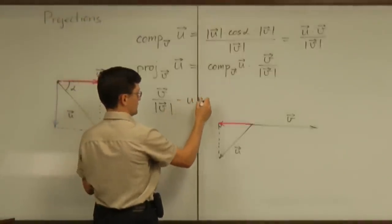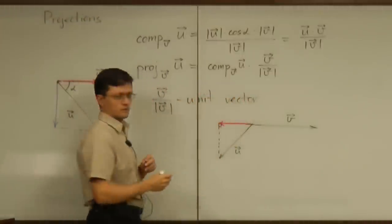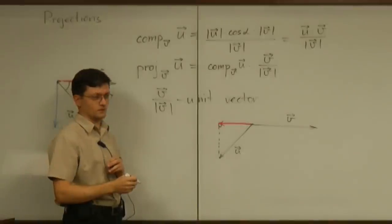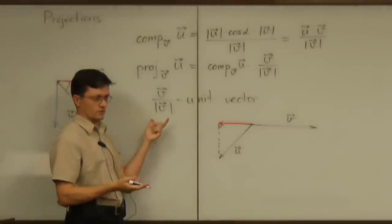It's called unit because it only has direction in the sense that the magnitude is one.